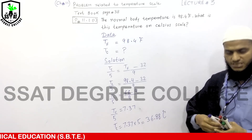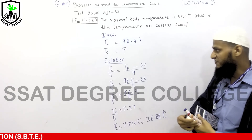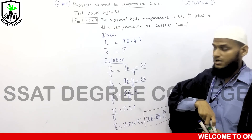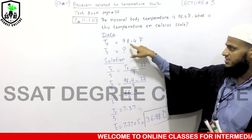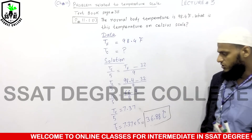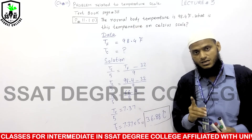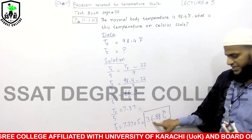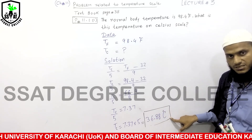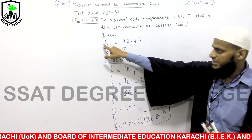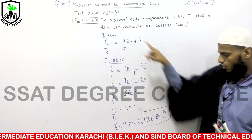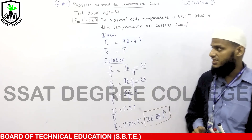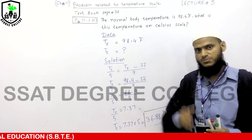So the answer is 36.88 degrees centigrade. In this way we converted Fahrenheit to centigrade. The normal body temperature is 98.4 degrees Fahrenheit, which equals 36.88 degrees centigrade. In the next lecture we will discuss the second part of numerical 11.1.